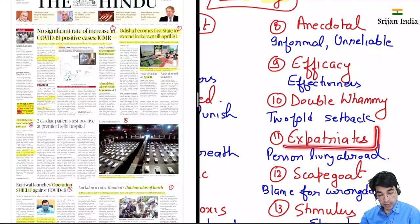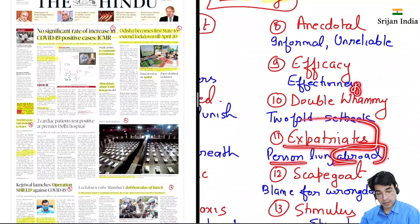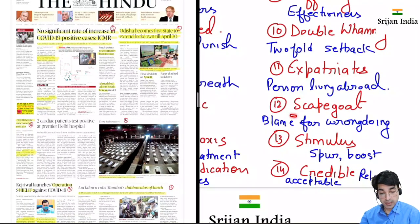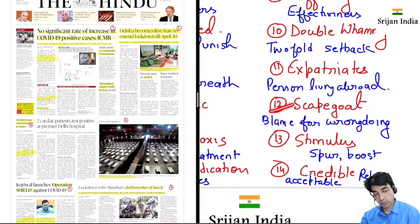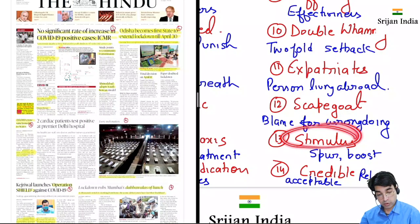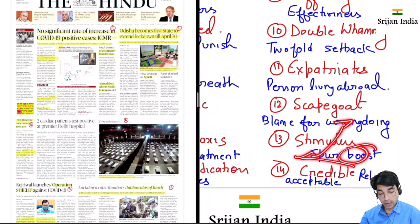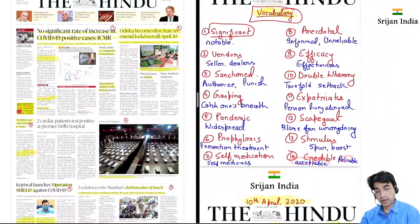Then 'expatriates' means person living abroad — koi is country se bahar reh raha hai, so these are called expatriates. 'Scapegoat' ka matlab hota hai blame karna for wrongdoing. 'Stimulus' ka meaning hota hai spur, boost karna, grow karna. 'Credible' ka meaning hota hai acceptable and reliable.